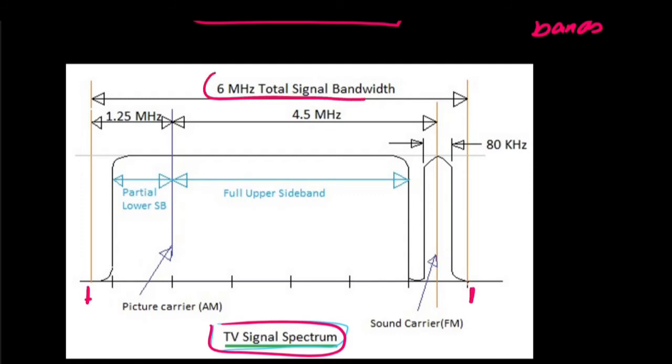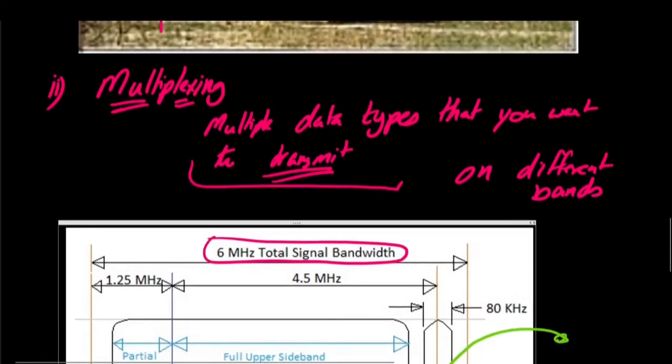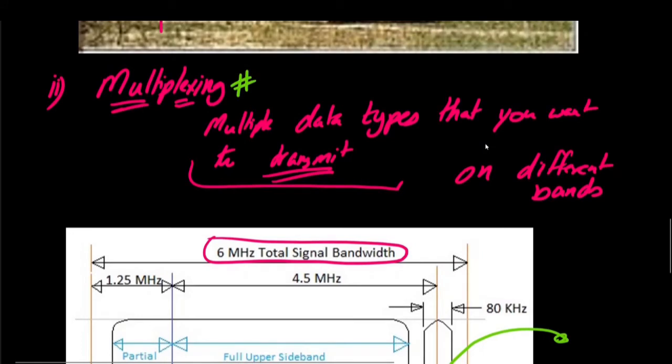For example, over here we have a TV signal. This TV signal spectrum has a bandwidth of 6 megahertz, starting from here and terminating at this point. This is our 6 megahertz of total signal bandwidth. In this 6 megahertz of bandwidth, from here until here we have the video signal, and in this range we have the audio signal. In short, we have translated the audio signal over here in this band and the video signal over here. We have multiplexed two different data types on a band at different frequencies. This type of multiplexing is achieved by means of modulation as well.